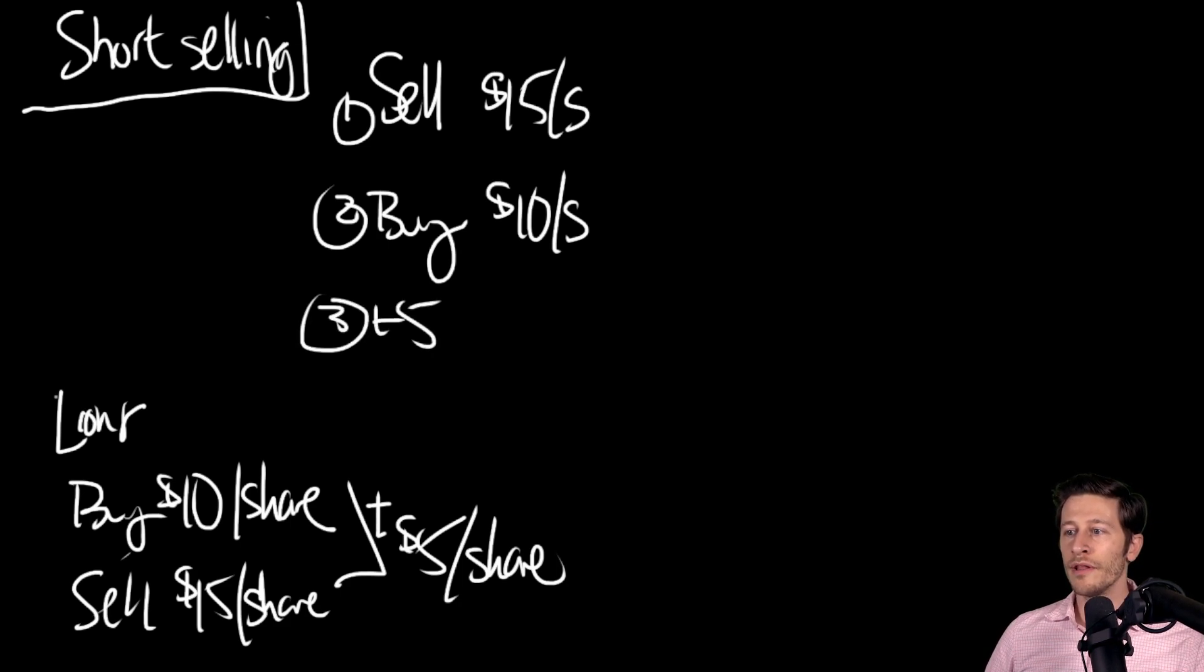And again, you are plus five dollars per share. You give the shares back to the person, the entity or whoever you borrowed them from. They still have their original shares. You've made five dollars per share.